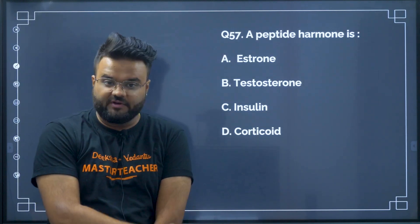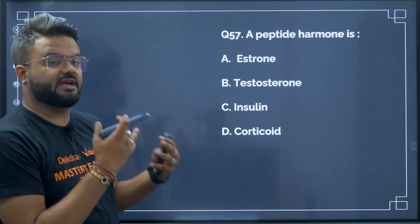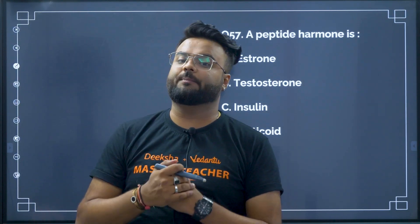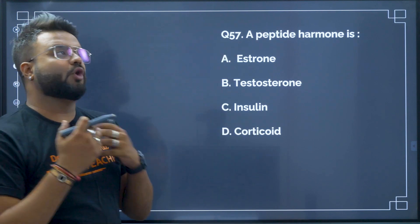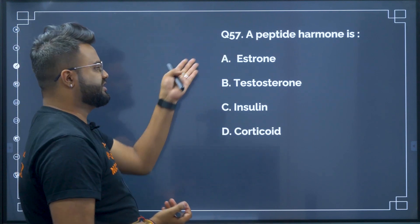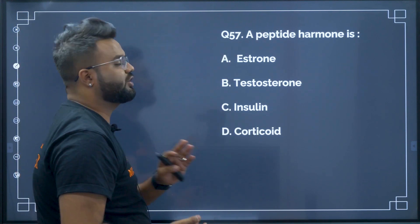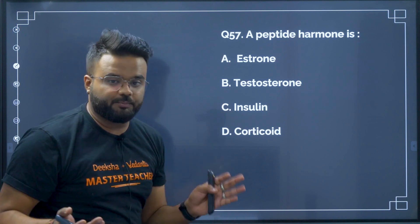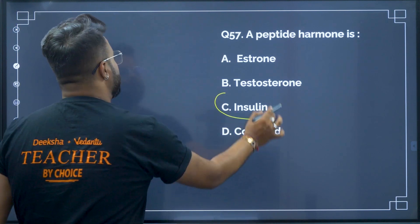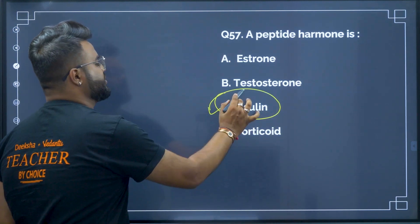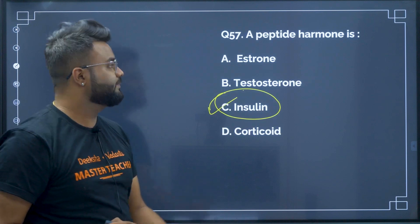Question number 57: what is a peptide hormone? Estrogen, testosterone, and corticoids are not peptide hormones. The peptide hormones are insulins — insulin is a peptide hormone.